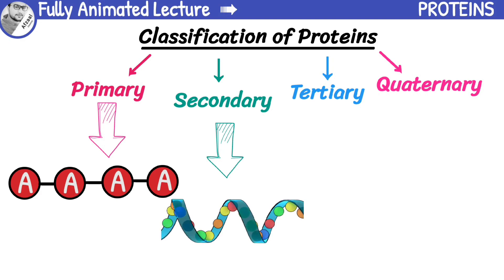Moving on to tertiary proteins. These are even more complex than secondary proteins and have a 3D structure. They are formed by folding of secondary protein structures.